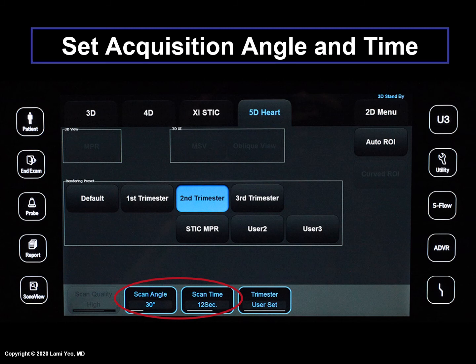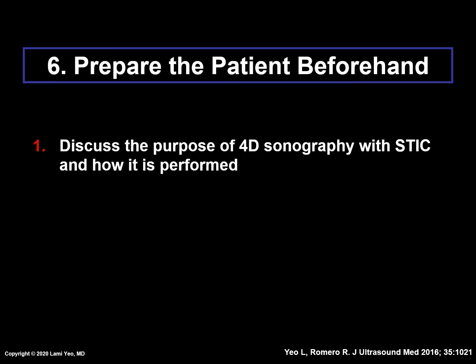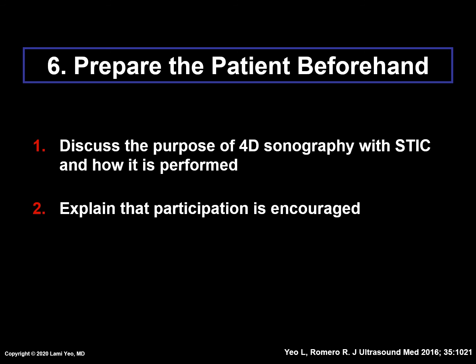It is also very important to set the acquisition angle and time for the STIC volume, which will be discussed in detail later in this lecture series. All of these measures are helpful because if conditions suddenly become optimal for STIC acquisition — for example, if the fetal spine becomes posteriorly located — the settings have already been programmed and one can immediately proceed with the STIC volume acquisition. The last general recommendation is to prepare the patient beforehand. We have found it very helpful to discuss the purpose of 4-D sonography with STIC and how it is performed, and to tell the patient that participation is encouraged, such as maintaining a breath hold and remaining motionless during the actual acquisition.